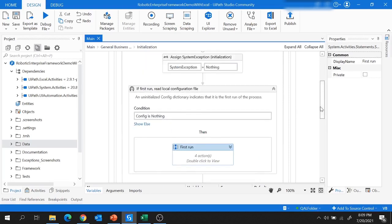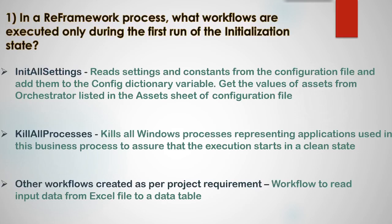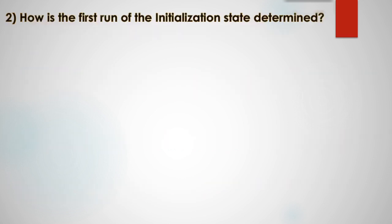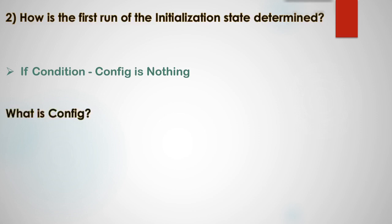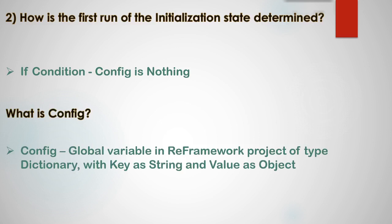After this question, you might get a follow-up: how is the first run of the initialization state determined? This is determined with the If condition 'config is nothing.' Config is a global variable in a RE Framework project of type dictionary, with the key as string and value as object.